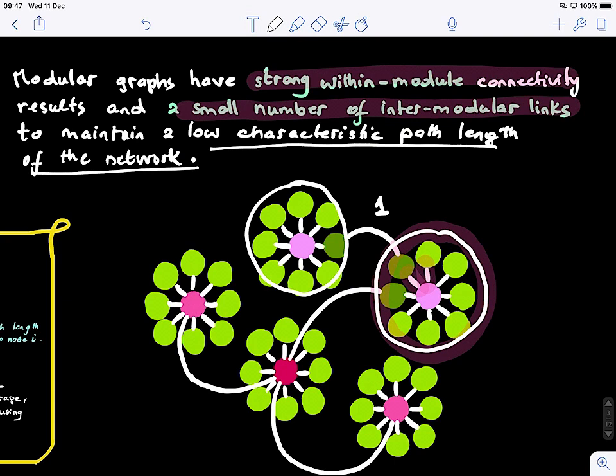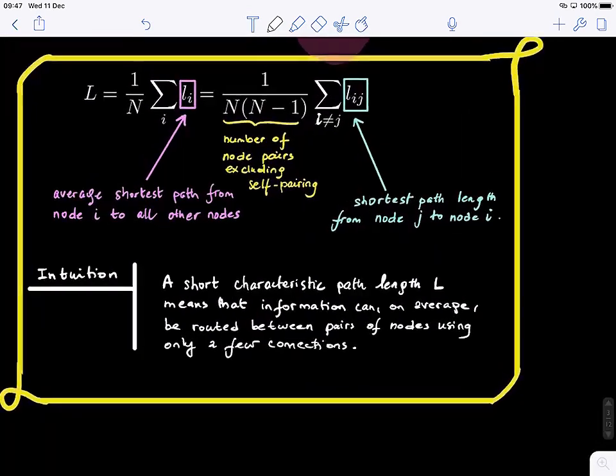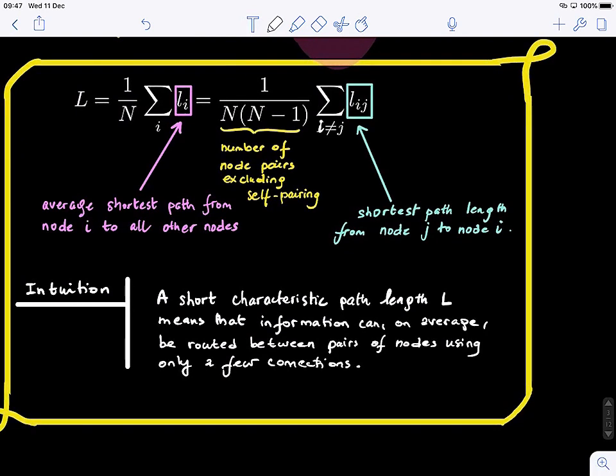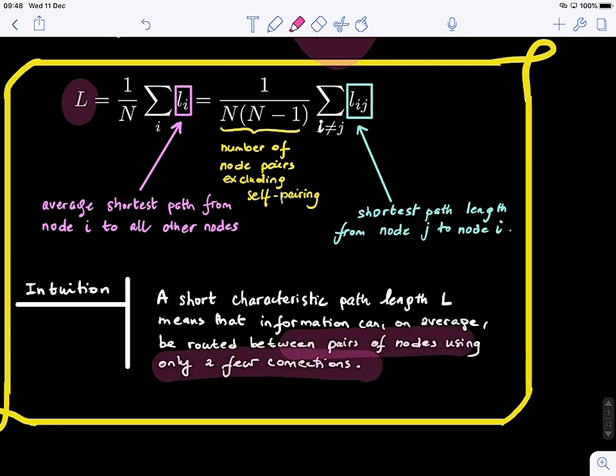Efficiency, right? Efficiency of information flow on a graph. Let me just refresh your memory. This is from lecture six. We looked at the characteristic path length L, and it's defined as the average path length along which information can be routed between pairs of nodes using only a few connections.